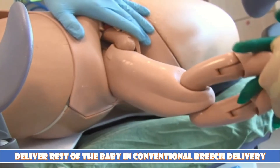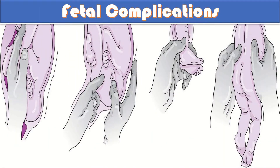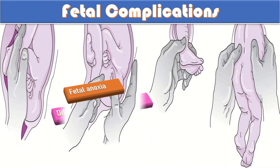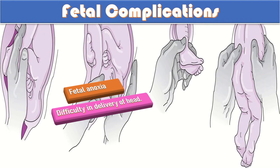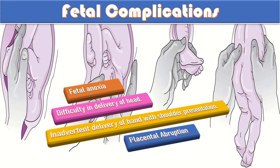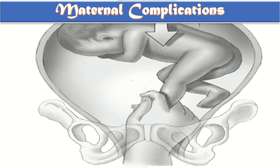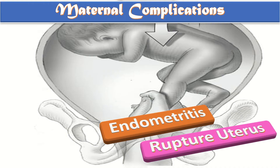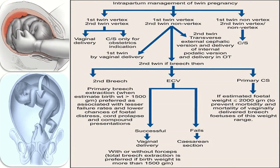What are the possible fetal complications of internal podalic version? These include fetal anoxia, difficulty in delivery of the head, inadvertent delivery of the head with shoulder presentation, placental abruption, and cord accident. This procedure is also associated with certain maternal complications, including endometritis and ruptured uterus.